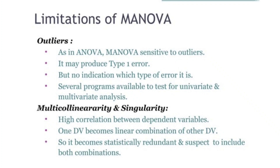The limitations of MANOVA include outliers, multicollinearity, and singularity. Like ANOVA, MANOVA is sensitive to outliers. It controls Type 1 error but does not eliminate it entirely, and you cannot always tell whether Type 1 or Type 2 error is being produced. Several programs are available to test univariate and multivariate analysis. Multicollinearity and singularity occur when there is high correlation between dependent variables, where one dependent variable becomes linearly related to another, making it statistically redundant.